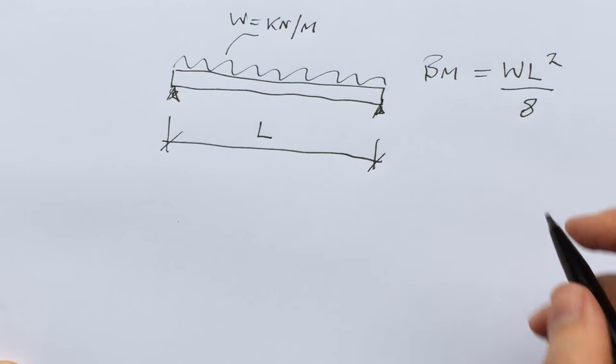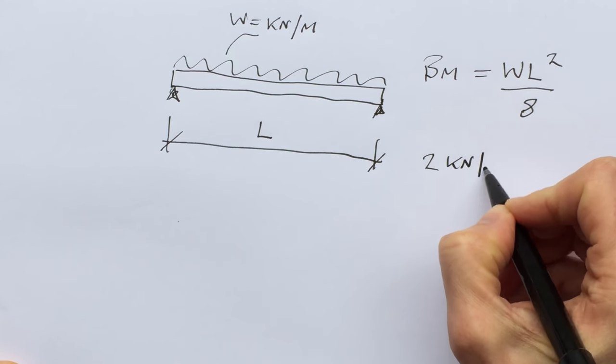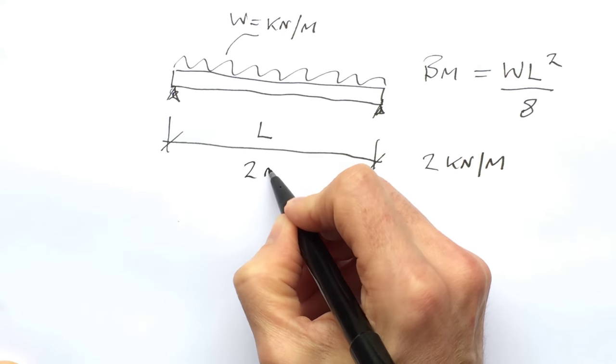So let's say that there are two kilonewtons per meter and that the length is two meters.